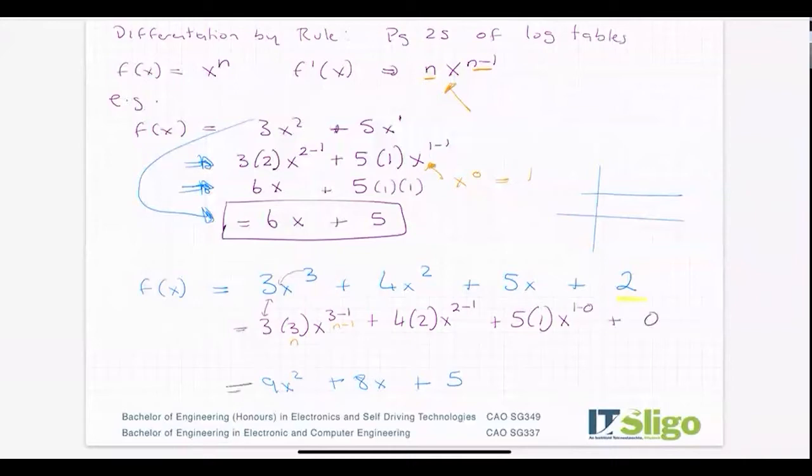The x^n rule is the most common, but there's a plethora of other rules that need addressing.